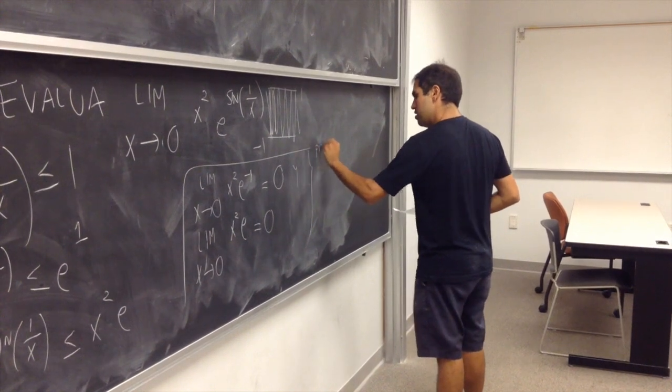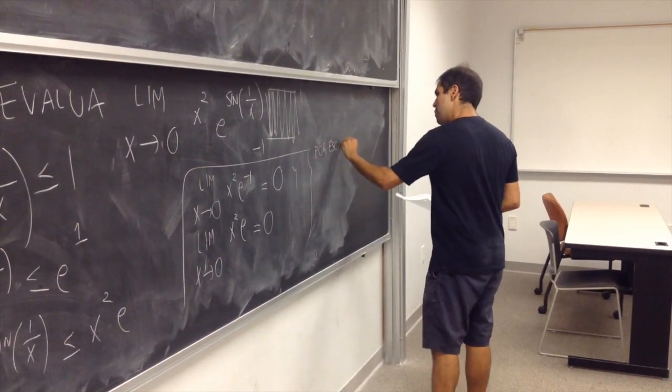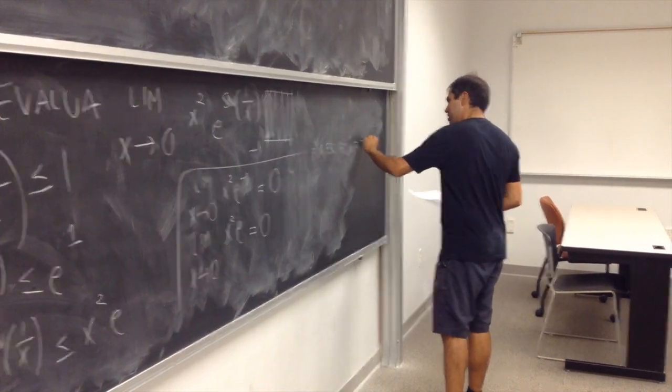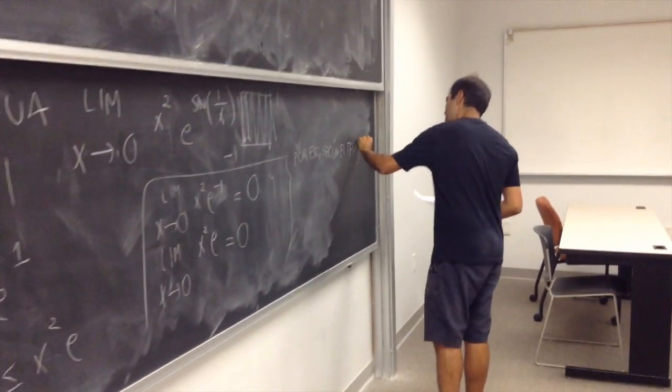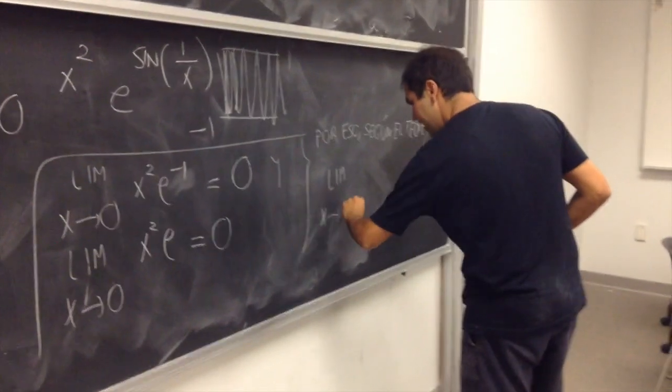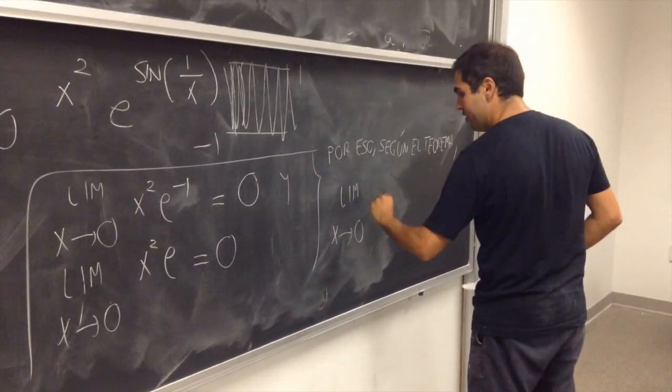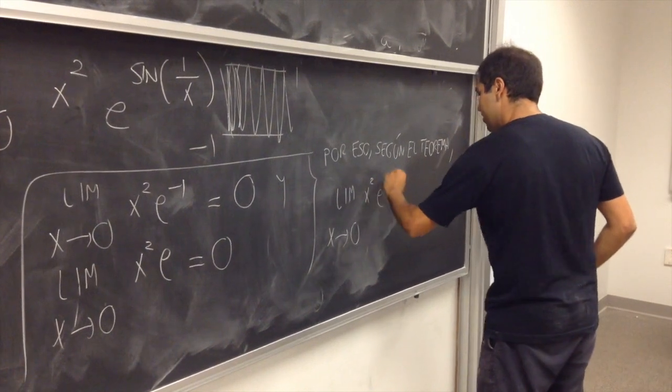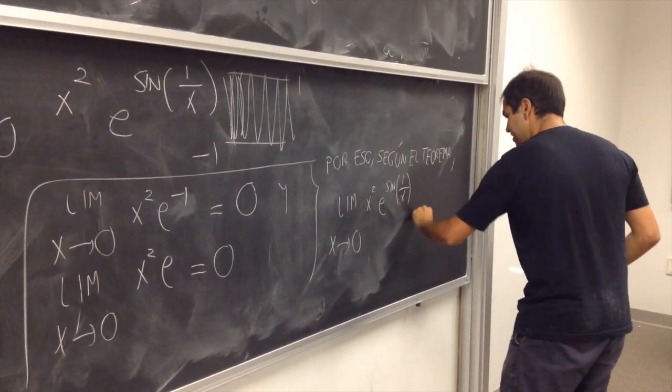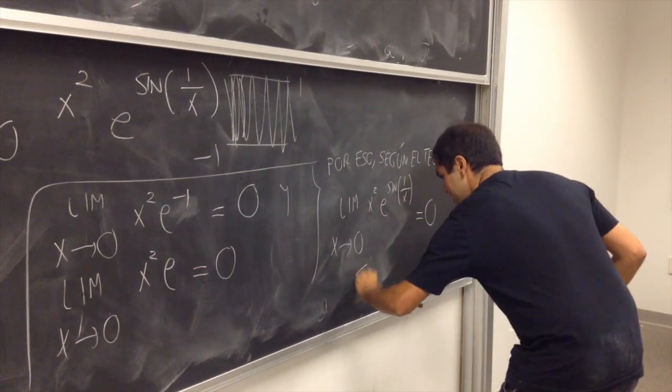Por eso, según el teorema, el límite x tiende a 0 de x cuadrado e a la seno de 1 por encima de x es igual a 0 también.